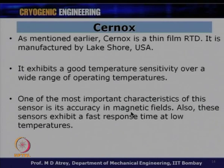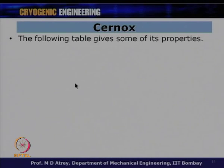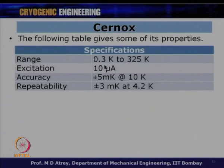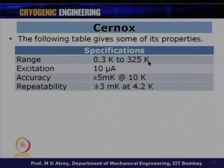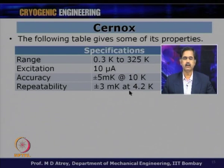Cernox sensors are packaged in a robust hermetically sealed casing similar to silicon diodes. The operating range is 0.3 Kelvin to 325 Kelvin — lower than silicon diodes' 1.4 K lower limit. Excitation is also 10 microamps. Accuracy is ±5 milli-Kelvin at 10 K, and repeatability is ±3 milli-Kelvin at 4.2 K.